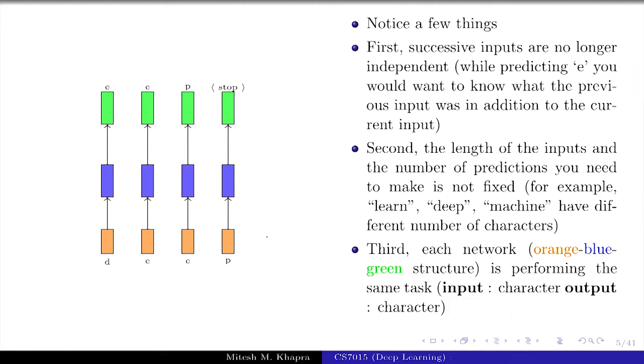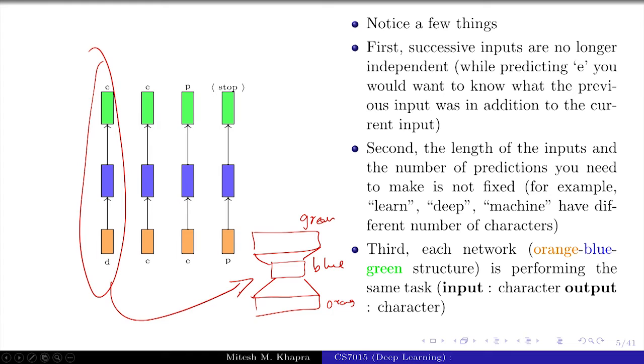How do we deal with this? The third thing here is that each network - I am calling this a network and I will clarify some notations soon - each network is actually performing the same task. It is taking as input a character and producing as output one character. Remember that these networks I have drawn vertically - you are used to seeing them horizontally with input, hidden layer, and output. This is the green part, this is the blue part, and this is the orange input - a fully connected layer. Each of these boxes is actually this network. I am just drawing it more concisely because I need to draw many such networks. Remember that each of these orange-blue-green structures is a fully connected network like this.